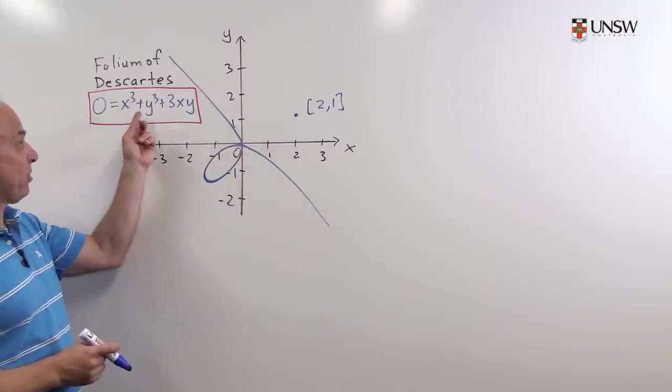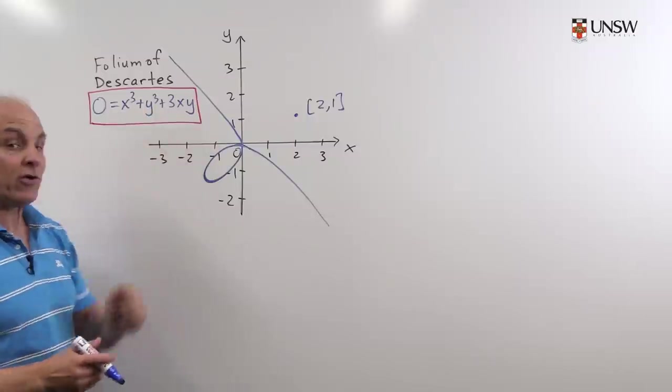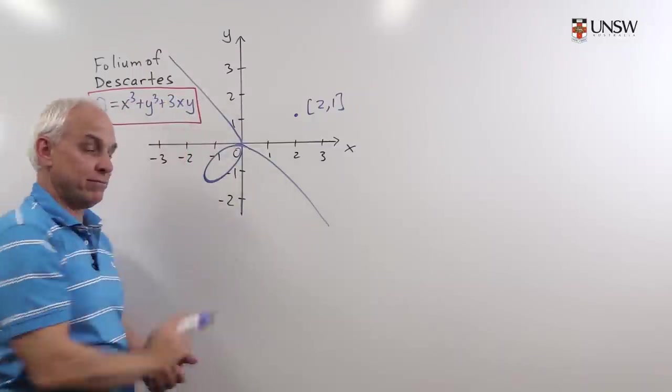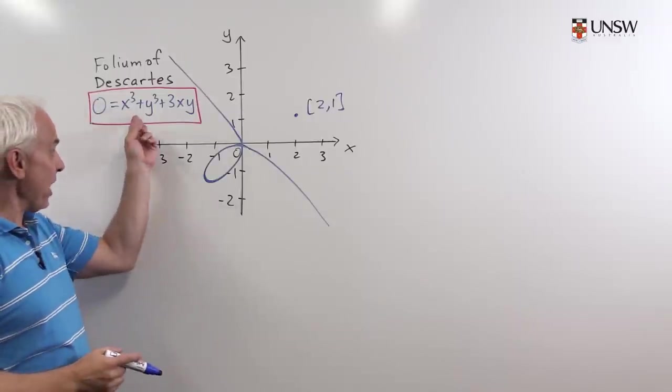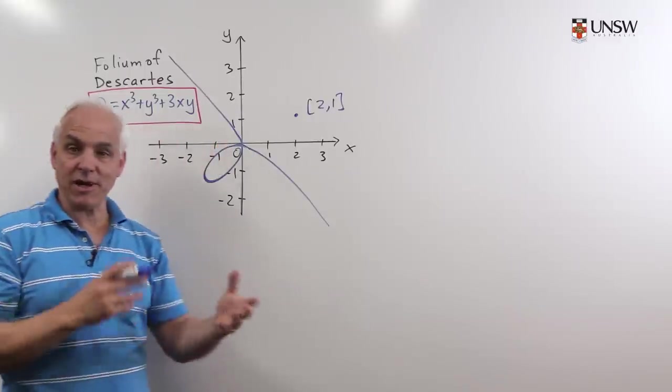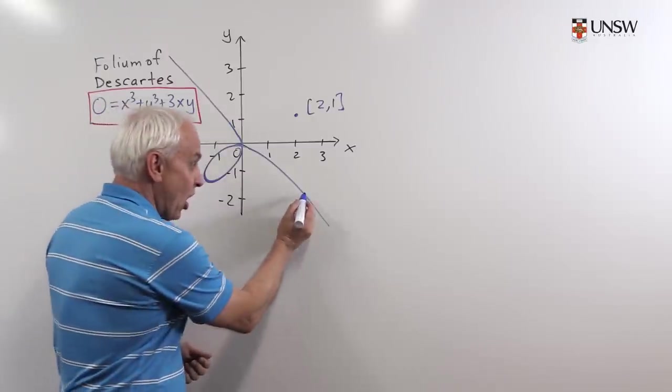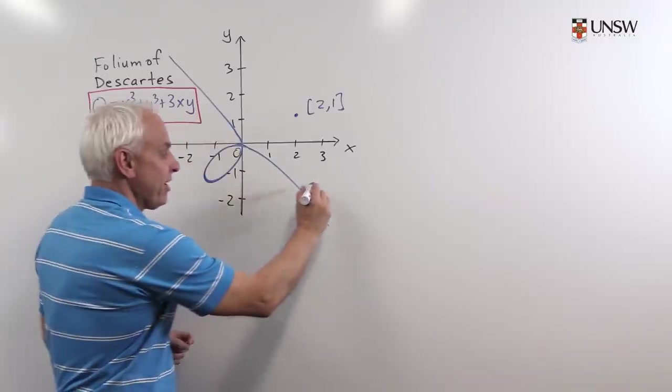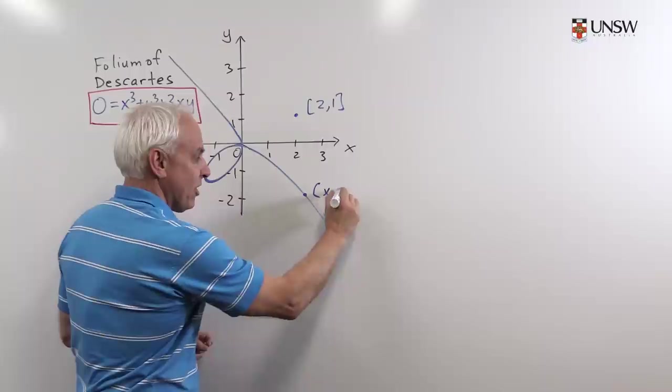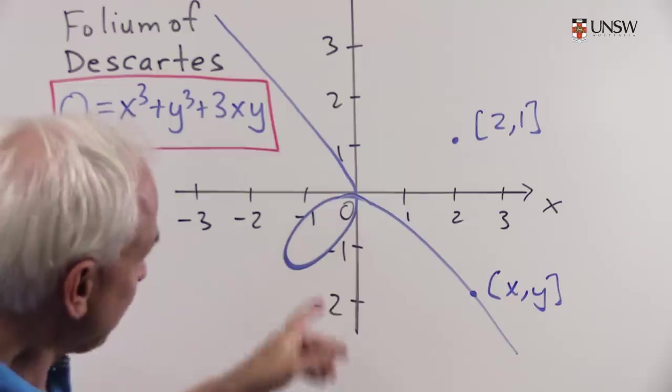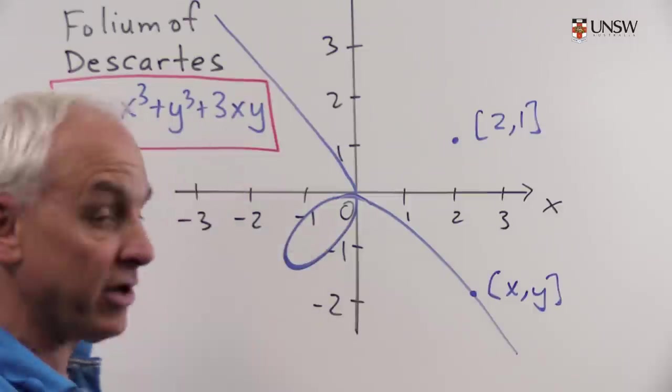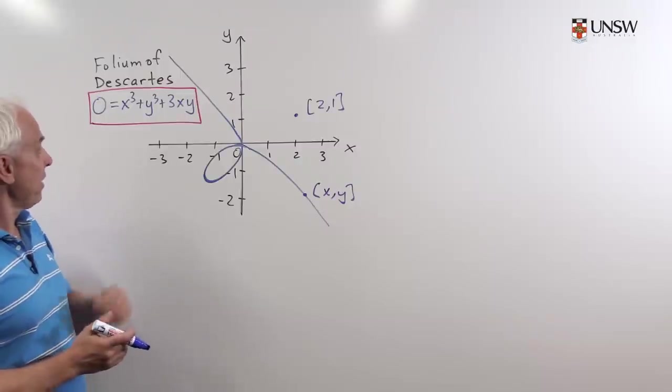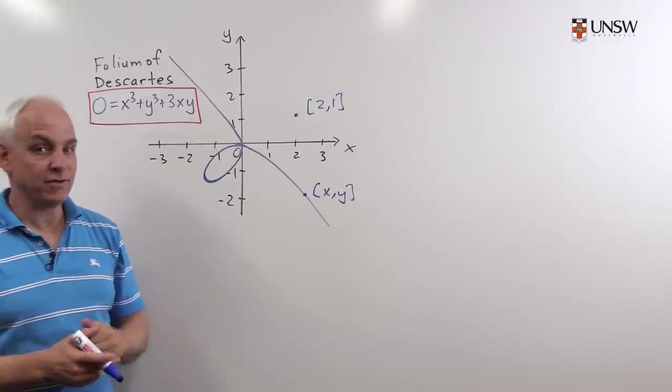Say like this one, x cubed plus y cubed plus 3xy equals zero, to specify or represent a curve. Very important idea that the equation and the curve are really two aspects of the same thing. A point on the curve satisfies the equation and something that satisfies the equation is necessarily a point on the curve. This is a particularly interesting curve that Descartes himself studied called the folium of Descartes. And it's a cubic curve because the polynomial that we have here is degree 3.